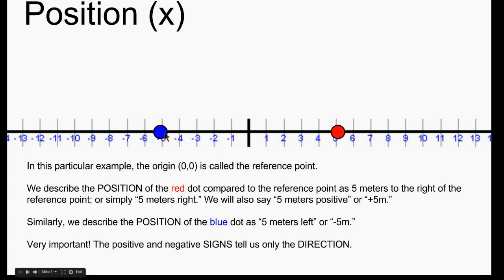Now this blue dot, it's to the left of the reference point, so we would say it's 5 meters left, or negative 5 meters. Now notice that a very important point here is that positive and negative signs, in this case, tell us only the direction.